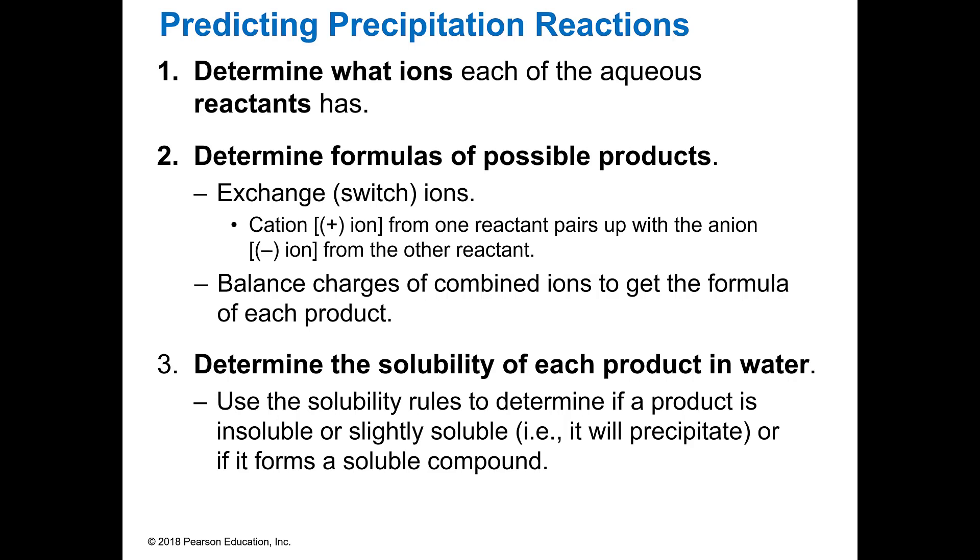So when you're predicting precipitation reactions, the first thing you do is you have to determine what ions each one of them has. Then you figure out the formulas of the products. Usually this involves switching them. You know that positives and negatives are the only things that can go together in ionic compounds. So you take the positive of one that was with a negative and you put it with the negative of the other reactant. And so by doing that, you just kind of switch them so that the cations and the anions switch up. It's kind of like square dancing a little bit. You determine the solubility of each one by looking at the rules and then you can tell is it a precipitate reaction or not, because if it doesn't form a solid, it's not a precipitate.